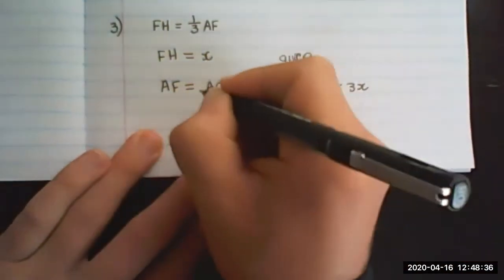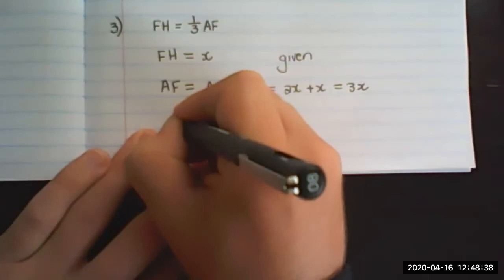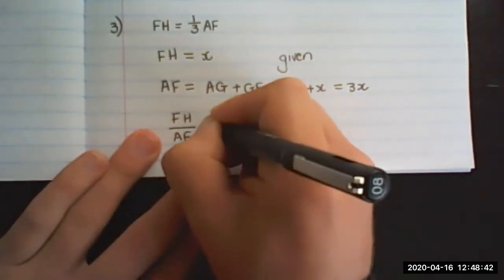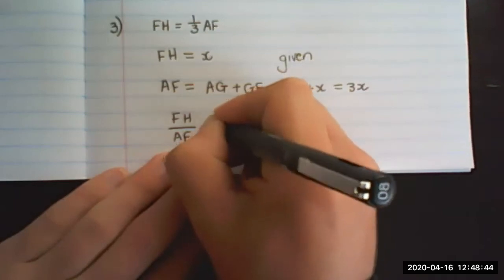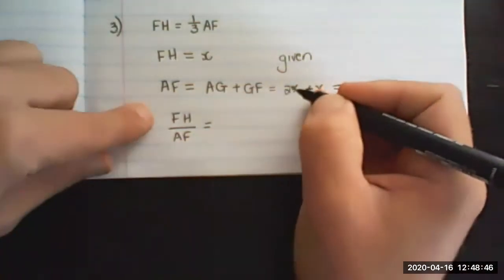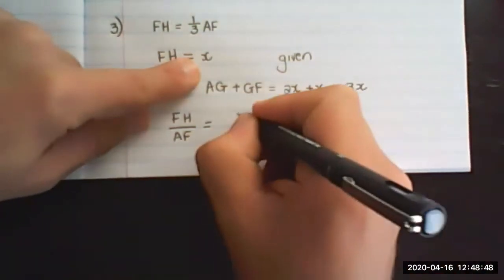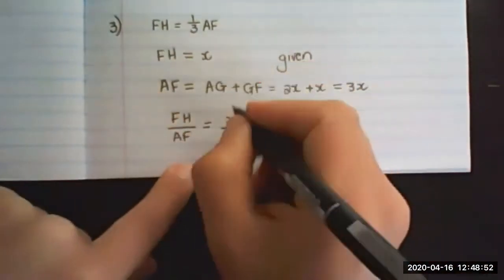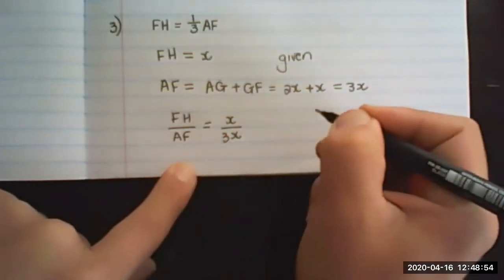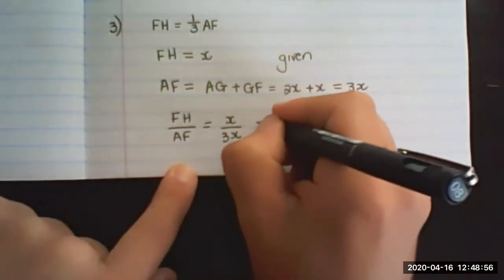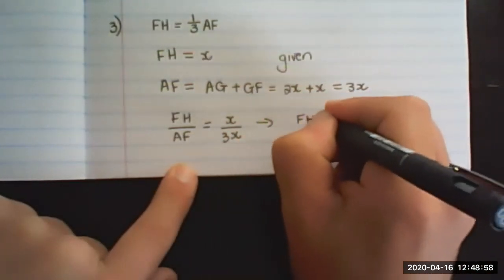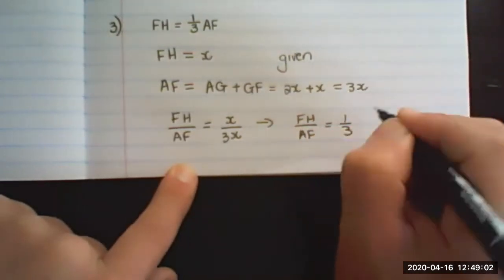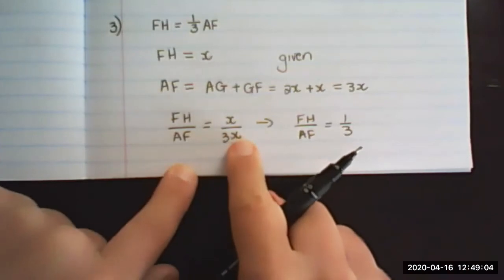Now if I write FH over AF, it's the same as saying FH is x, right? So it's x over AF which is 3x. Which leads to FH over AF is equal to a third, because the x's can cancel out.